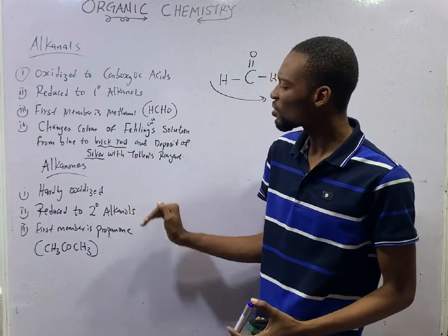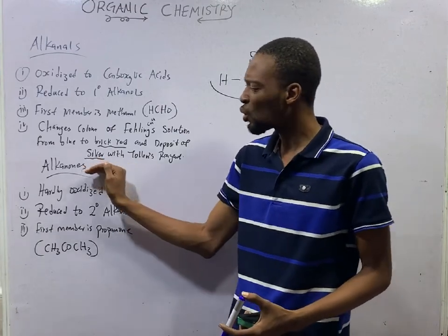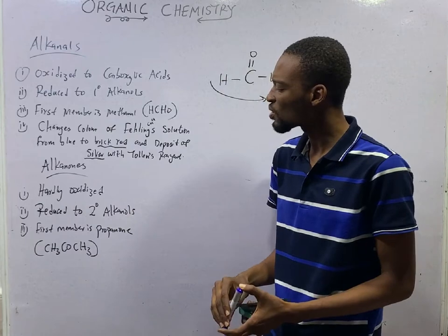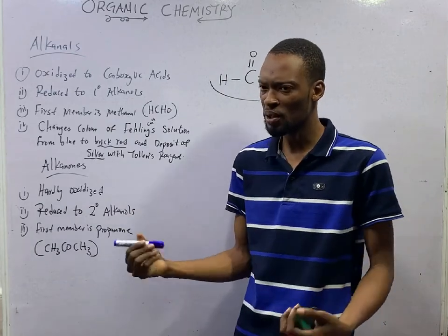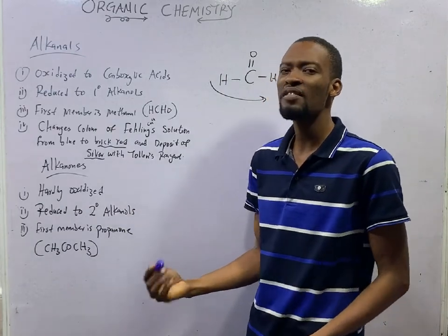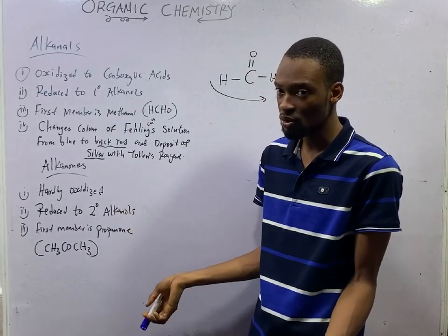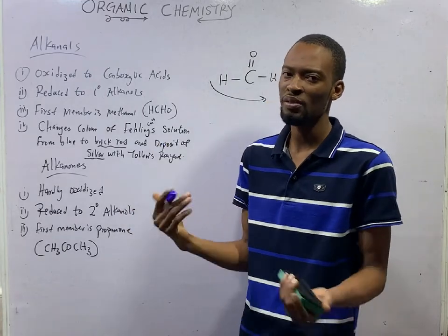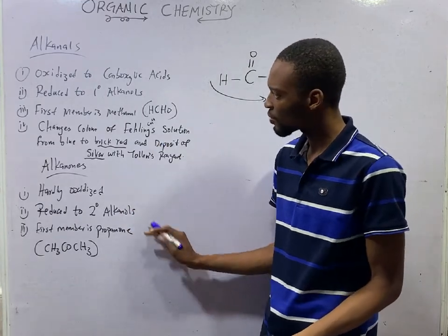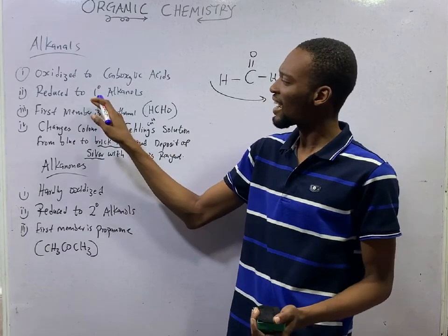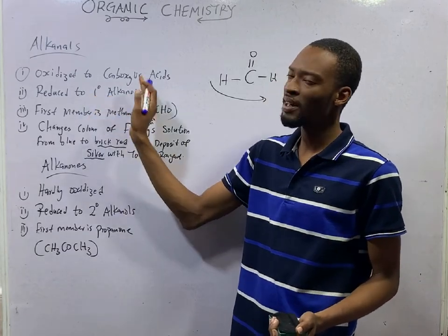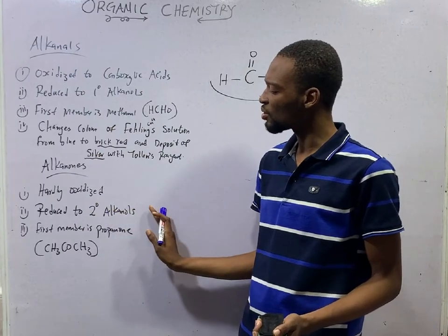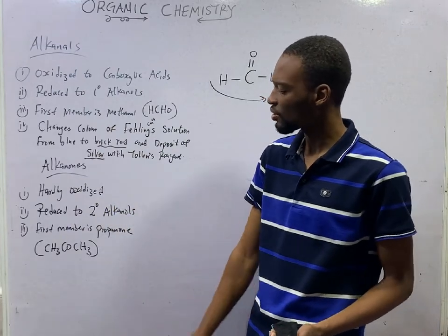Secondary Alcohols are oxidized to Ketones, and Ketones are reduced back to secondary Alcohols because they come from secondary Alcohols. So when they are reduced, they go back to where they came from — secondary Alcohols. Look at the difference: Aldehydes are reduced to primary Alcohols, but Ketones are reduced to secondary Alcohols.